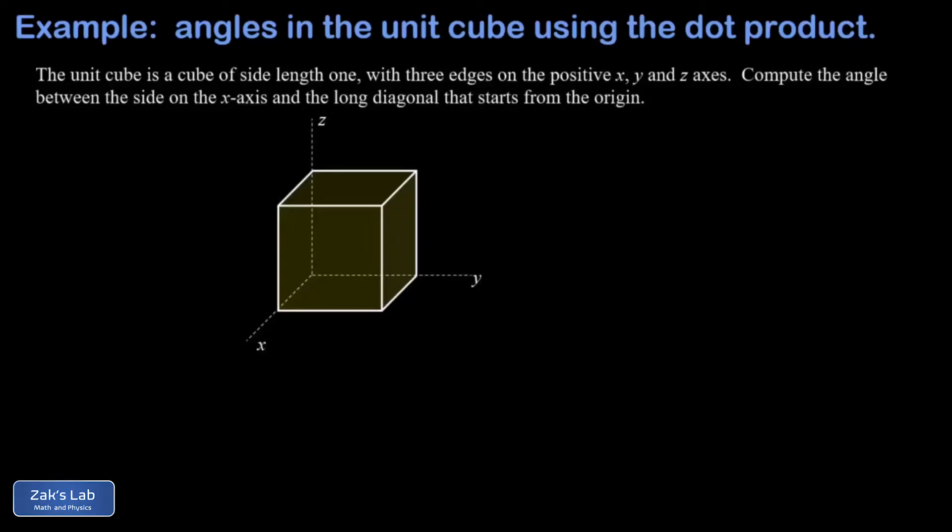In this video we're looking at the unit cube. This is a cube with a side length of one, and one of its corners is located at the origin. Three of its edges are lying on the coordinate axes x, y, and z.